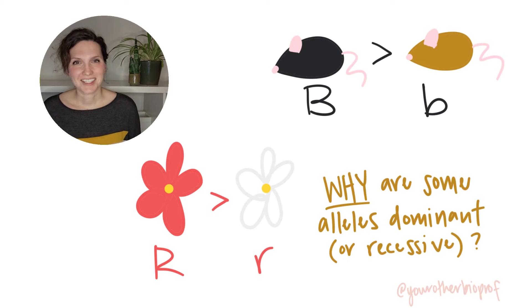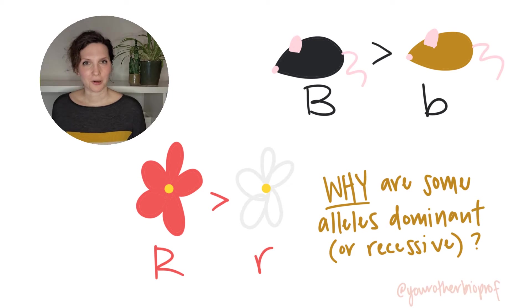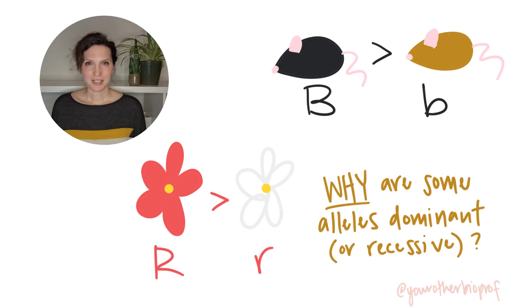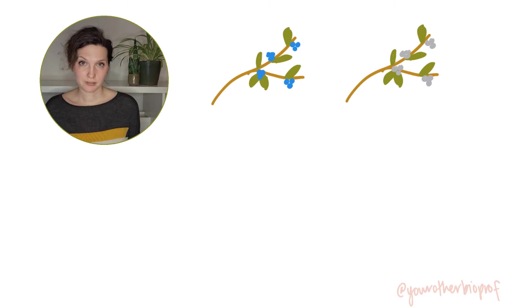Hi biology friends, it's Sarah, your other biology professor. Let's talk about why some alleles are dominant and some are recessive. Let's start with an example — we're going to use berry color. In this system, berry color is controlled by a single gene and we've got two phenotypes: blue and white berries.